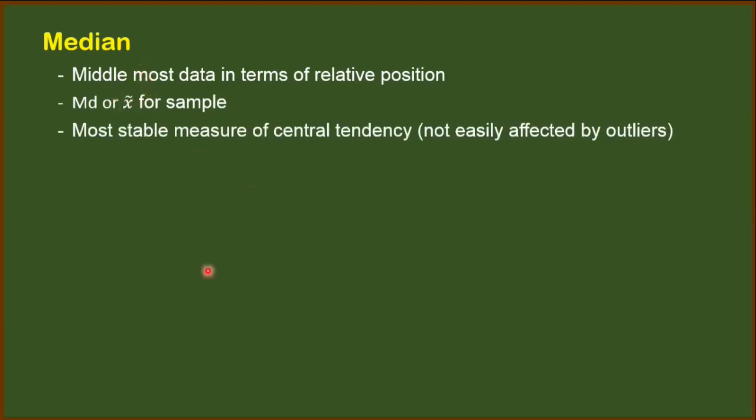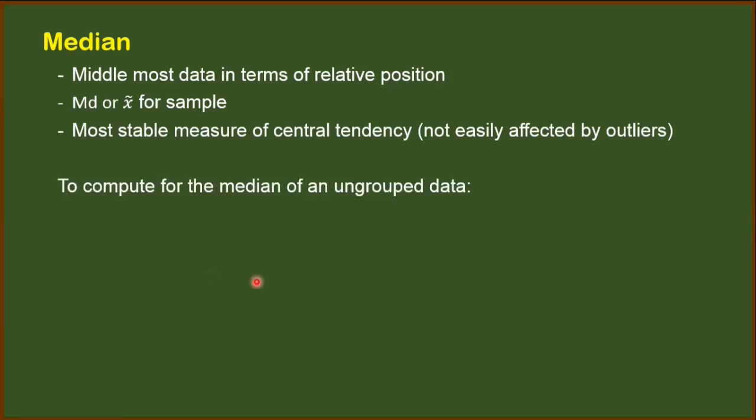It is also the most stable measure of central tendency because it is not easily affected by outliers. Outliers are the extreme values — either the very high or the very low values. If those extremes are changed, there is a possibility that the value of the median is not changed.